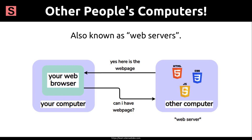Whenever someone else's computer is set up to send us web pages over the internet, we call it a web server. Now that definition isn't perfect — it's missing a few things that we'll cover in later units, but it's close enough for now. What really happens behind the scenes is that your web browser asks the web server at Facebook.com if it can have the web page, and the web server — which is really just another computer hooked up to the internet — says sure, here's a copy of it. You can think of Facebook.com as the telephone number of that web server. We call it a web address. We need web addresses because otherwise you wouldn't know which computer to connect to in order to get the correct web page. We'll go into more detail about web addresses near the end of this unit.